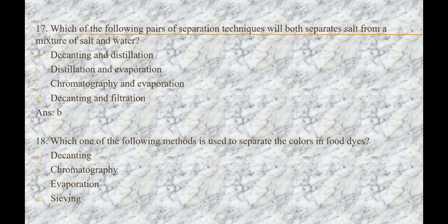Next question is: which of the following methods is used to separate the colors in food dyes? Option A) decanting, option B) chromatography, option C) evaporation, option D) sieving. The answer is B, that is chromatography.